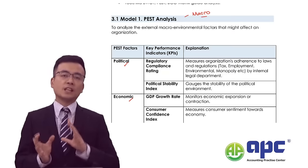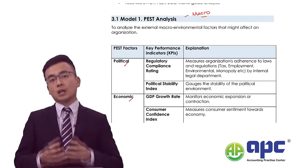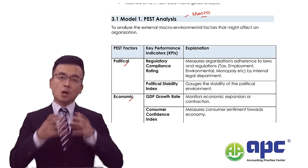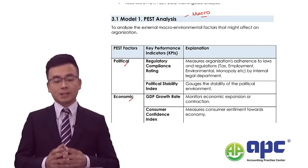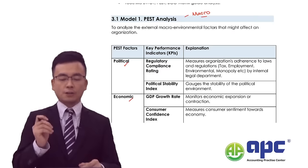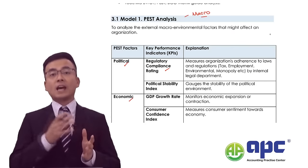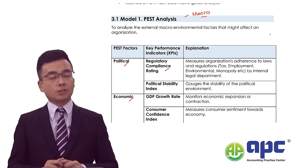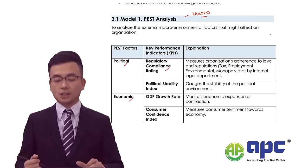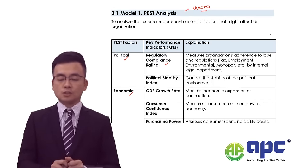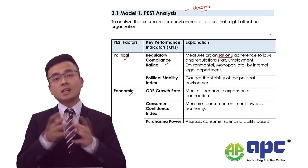Unlike what we've seen in the strategic papers studied before, now we are looking from the advanced performance management paper's point of view — how to put them into practice. For the political element, the first KPI is the regulatory compliance rating. It's absolutely important that we adhere to the majority of regulations in the marketplace — whether our organisation is adhering to relevant laws and regulations, including existing and new ones.